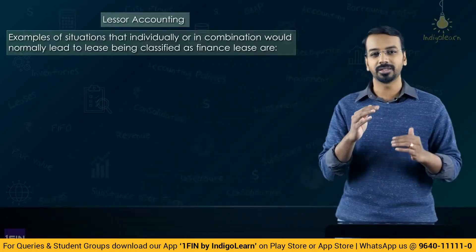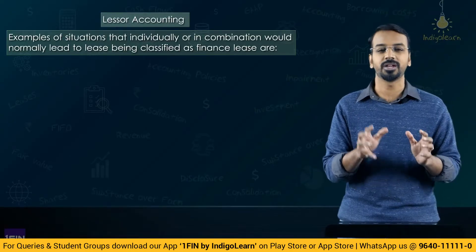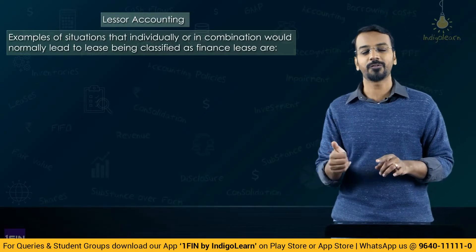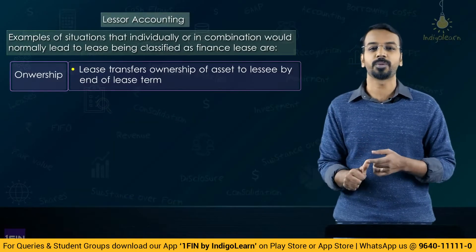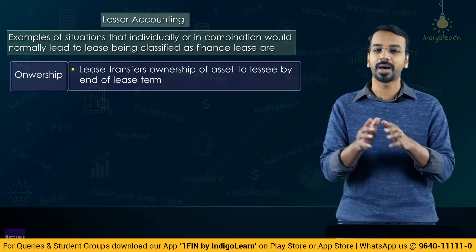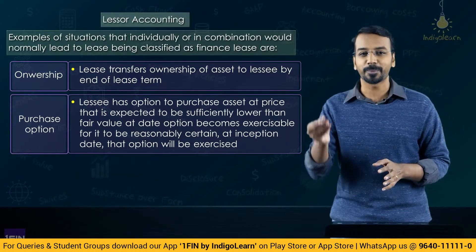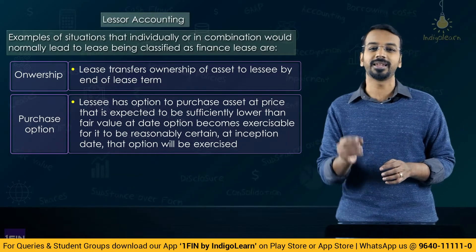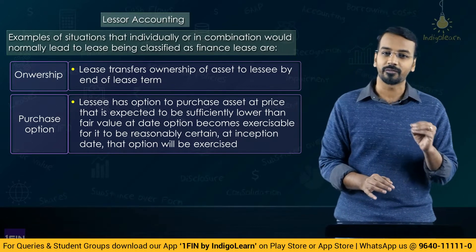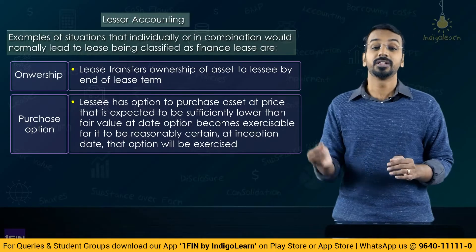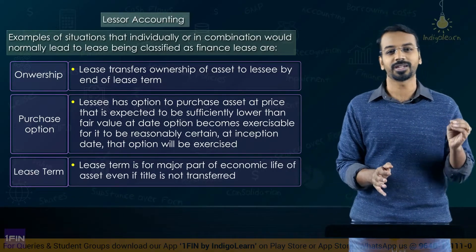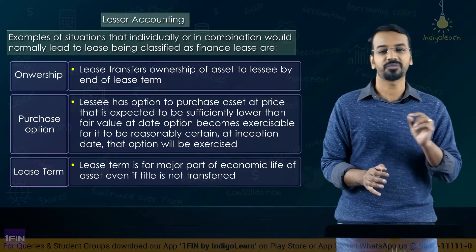There are some examples given, and generally the first five examples are more relevant for examination purposes. First, if there is a transfer of property at the end of the lease term, it is a finance lease. Second, if there is a bargain purchase option and it is reasonably certain that the lessee will exercise it, it is also a finance lease. Third, if the lease is for a major part of the economic useful life of the underlying asset, it is also classified as a finance lease.